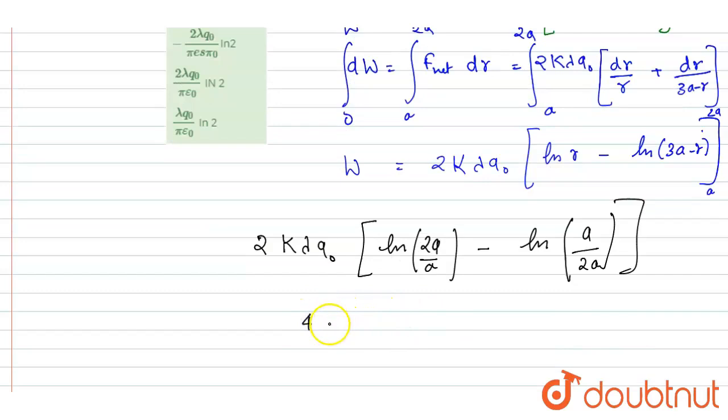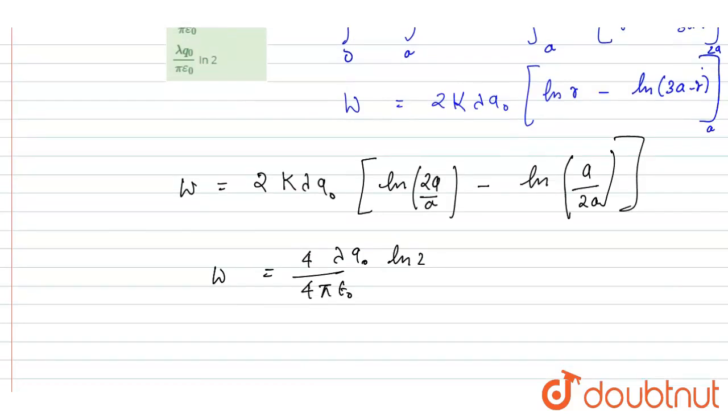So 4k is this, and lambda Q naught ln 2. So I took 2ln 2. So this, I took 2 outside this.